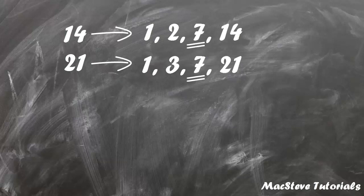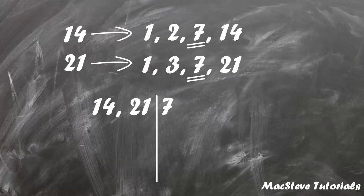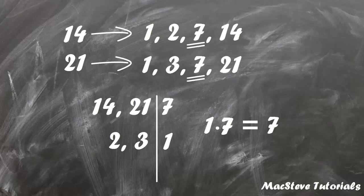The second method is to write down 14 and 21. Here we can see that both numbers can be divided by 7, which gives us 2 and 3. 2 and 3 don't have a common factor except 1, so greatest common factor for 14 and 21 is 1 times 7, which is 7.